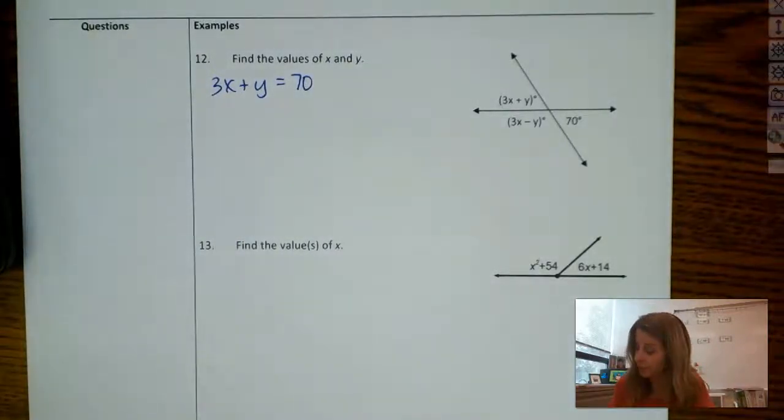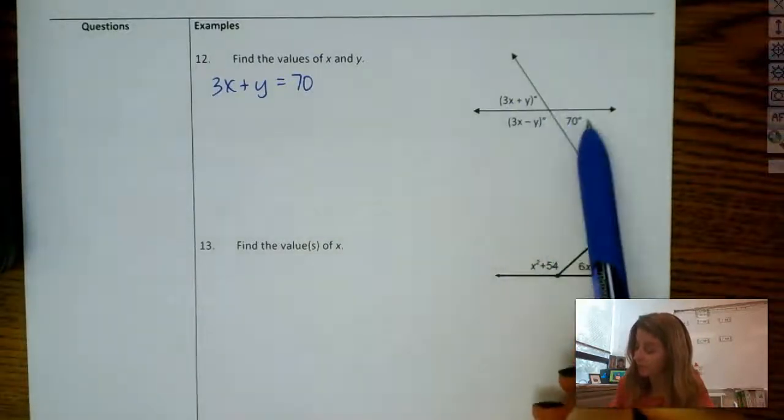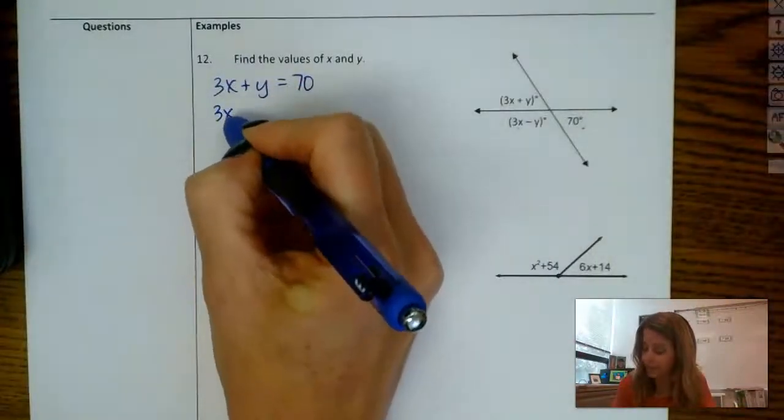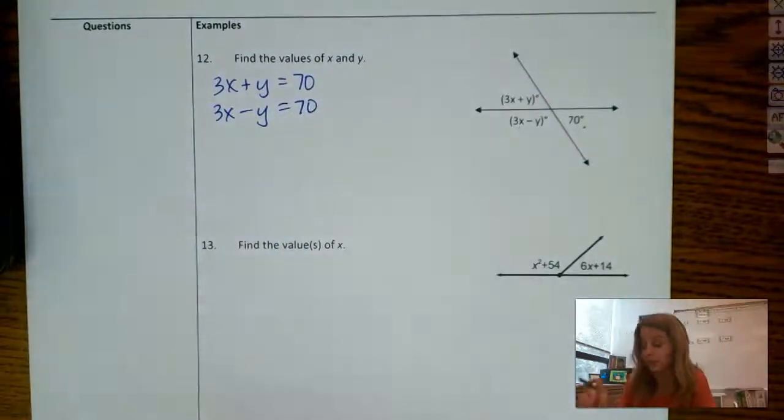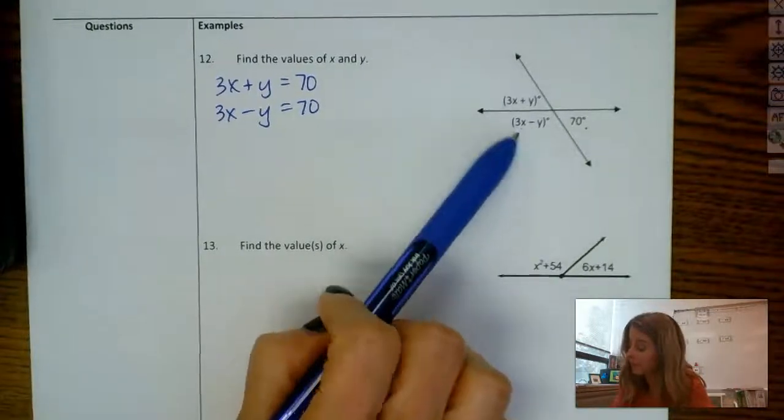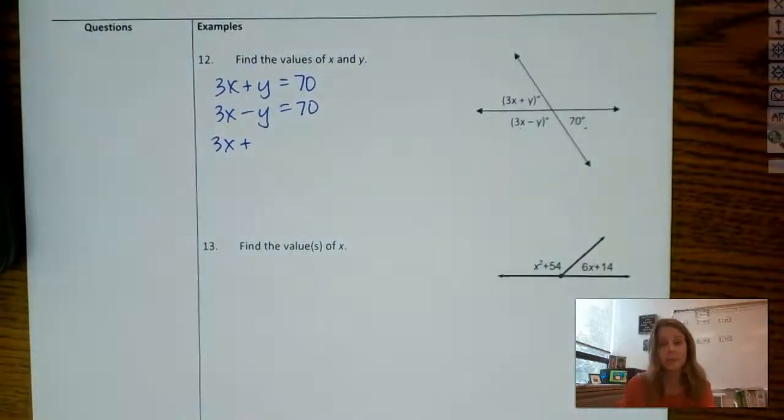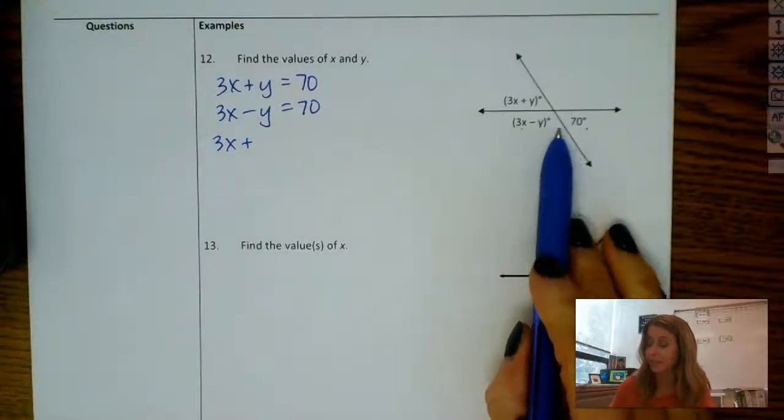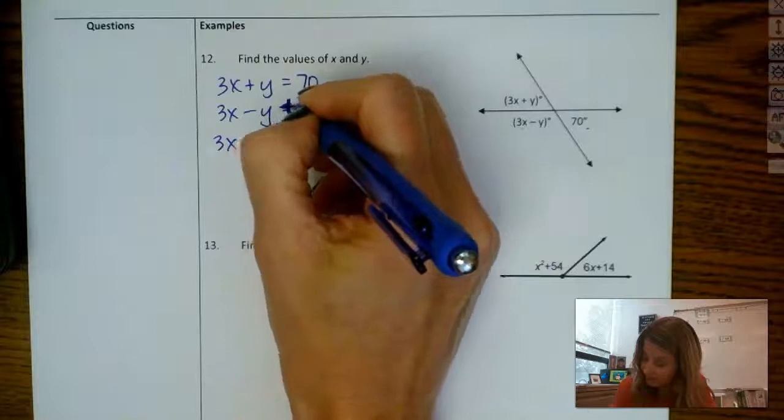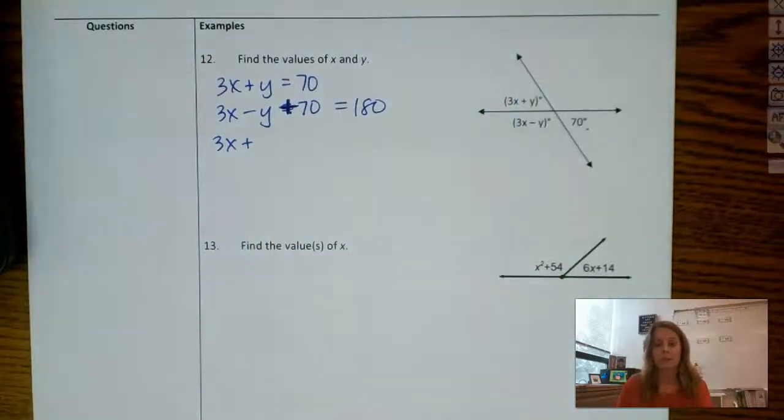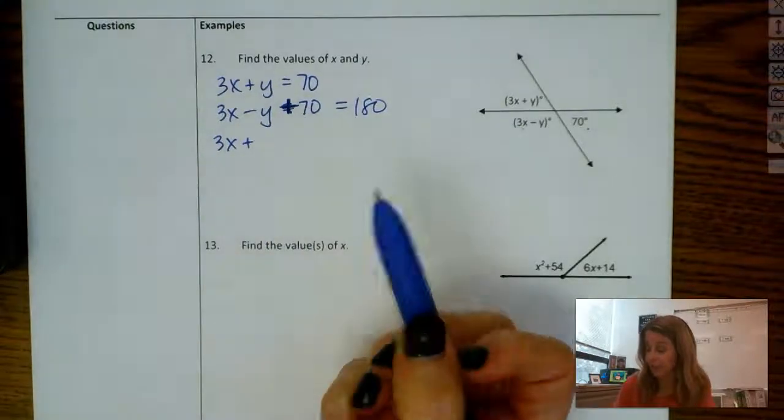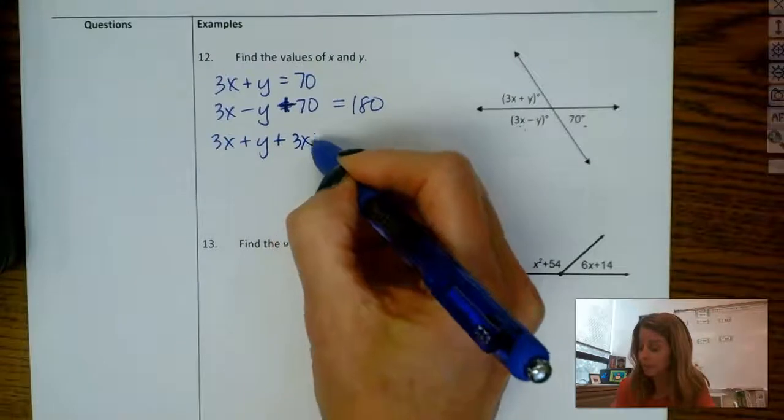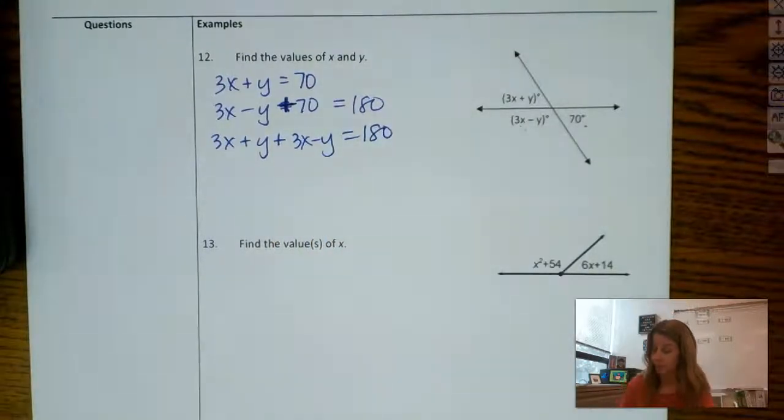So I could write down this relationship. 3x plus y equals 70. That's a true statement. I also have some linear pairs here. I've got, I'll write this first, the bottom one down first. I have 3x minus y equals 70. And I actually could solve a system of equations with those two. I'm also going to write this linear pair down. 3x. Oh, hang on a second. I made a mistake there. 3x minus y is not equal to 70. 3x minus y plus 70 is equal to 180. So let's fix this. Make that a plus sign. So that wouldn't be quite as easy to do a system of equations. I could, though. A linear pair here. So 3x plus y plus this one, 3x minus y equals 180. So you have some options.